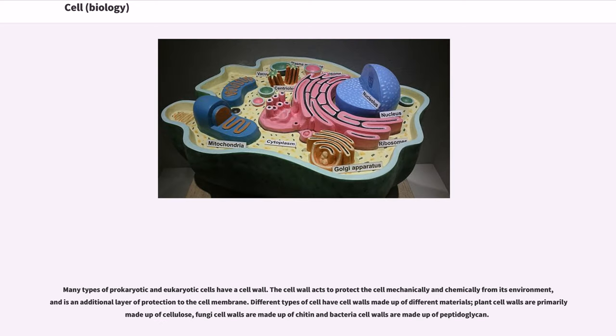Many types of prokaryotic and eukaryotic cells have a cell wall. The cell wall acts to protect the cell mechanically and chemically from its environment and is an additional layer of protection to the cell membrane.